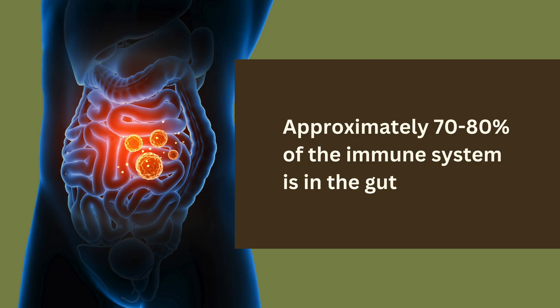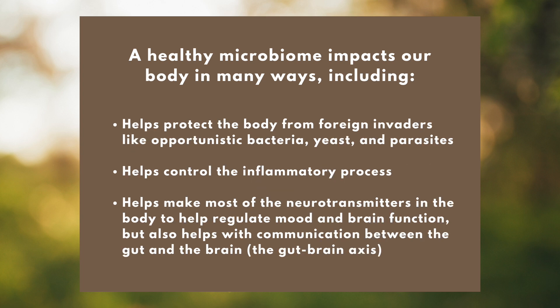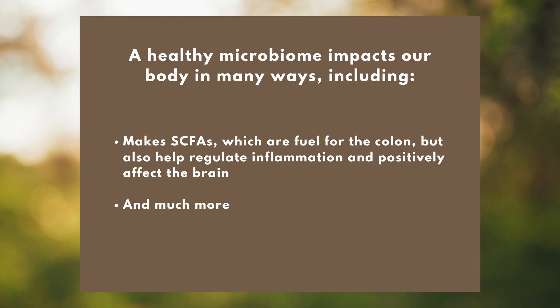Approximately 70-80% of our immune system is in our gut, and a vast majority of our immune system comes from our microbiome. Here are some key functions of the microbiome: it manufactures certain vitamins in the gut; aids in digestion by producing enzymes that help digest carbohydrates; helps convert inactive thyroid hormone to your active thyroid hormone; has a role in metabolism; helps protect the body from foreign invaders like opportunistic bacteria, yeast, and parasites; helps control the inflammatory process; helps make most of the neurotransmitters in the body to help regulate mood and brain function, and also helps with communication between the gut and the brain, or what we call the gut-brain axis; and makes short-chain fatty acids which are fuel for the colon but also help regulate inflammation and positively affect the brain — and much more.